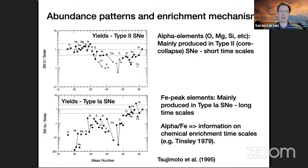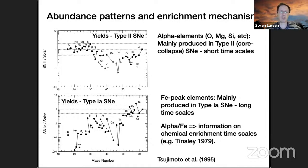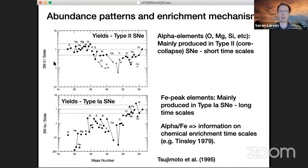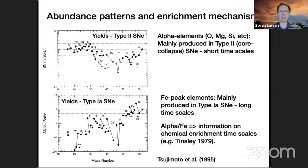Beyond doing these measurements, there's the aspect of connecting this to astrophysics in general — what are the sites where elements are actually produced and returned to the interstellar medium, then incorporated in subsequent generations of stars. What is shown here are the abundances of different chemical elements in Type II and Type Ia supernovae relative to the solar chemical composition.